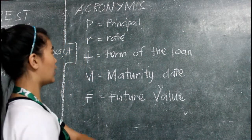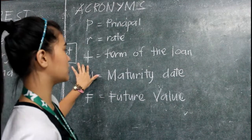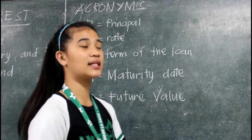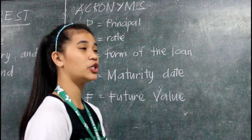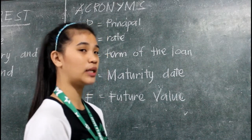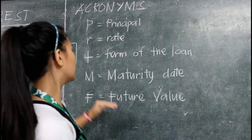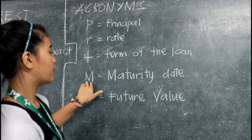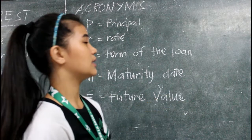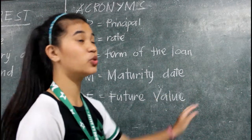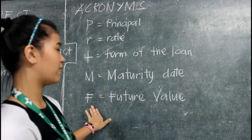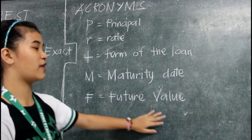Third, we have the small letter T for the term of the loan. This is the time between your loan or investment and the due date. Fourth, we have M or maturity date. This is the due date. F is the future value.